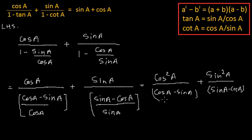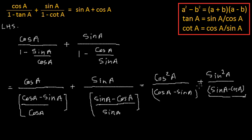If you see properly, here we have cos A minus sin A and here we have sin A minus cos A. So if I want the same denominator in both terms, I can take a minus sign common from any of these terms. If I take minus sign common from the second denominator, this will become cos A minus sin A, and I have to put a minus sign in front of that term, so the whole term becomes negative.